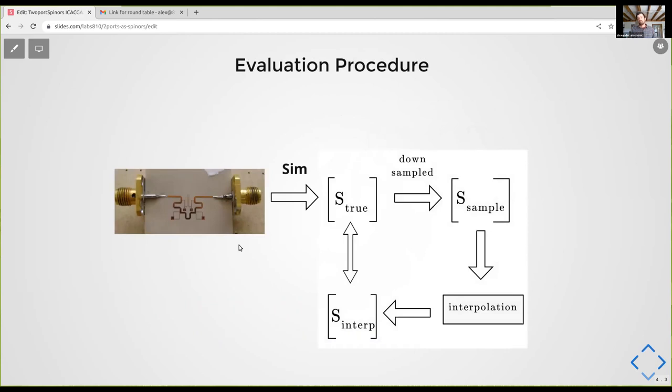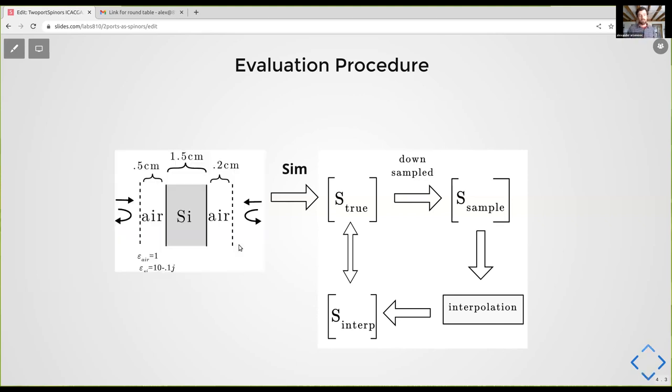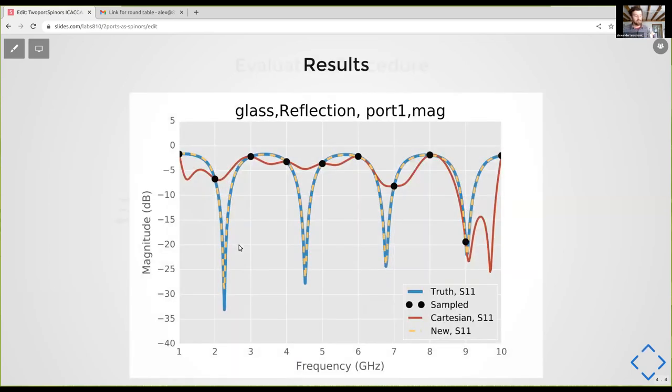So how are we going to evaluate this, we have a circuit, we're going to simulate this circuit, going to have a list of matrices that are true, we're then going to down sample it and then interpolate it and compare the interpolated result with the true result. So everything's done on a computer. The device under test in this case is just a slab of glass with some air padding on each side. So it's a pretty simple network, but it gives you some nice mismatch and resonant behavior. And it's actually a useful test case for material characterization, which is a problem of interest at high frequencies.